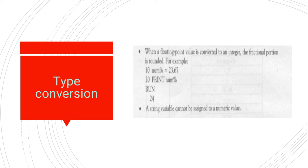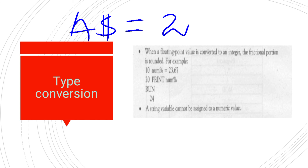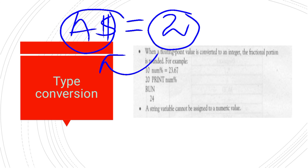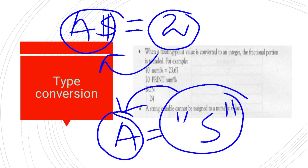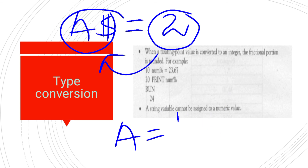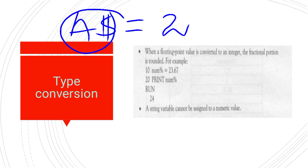An important rule: a string value cannot be assigned to a numeric variable, and a numeric value cannot be assigned to a string variable. A variable with a dollar sign is a string variable. If we try to assign a numeric value like 2 to a string variable, it will not be stored because that is a string variable and this is a numeric value — it will give an error. Similarly, if we try to store a string constant into a numeric variable, the numeric variable will never accept the string constant. It will not accept it and you will have an error.